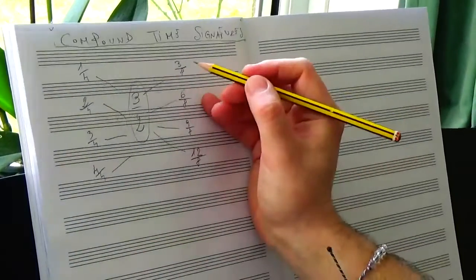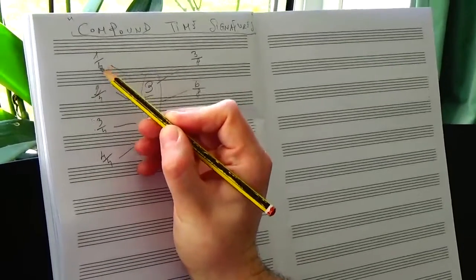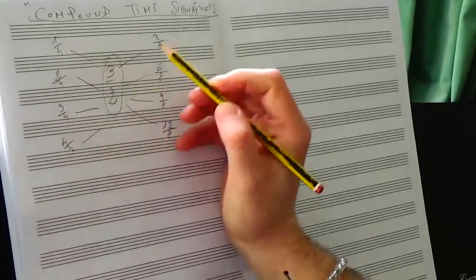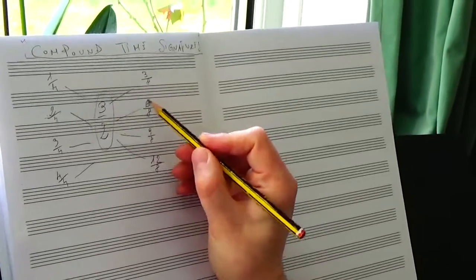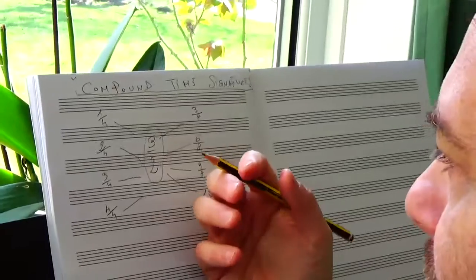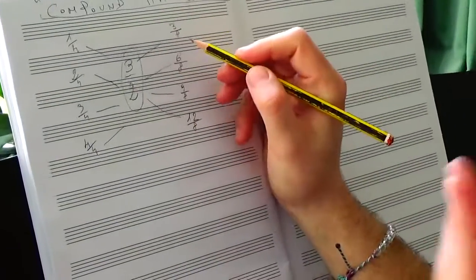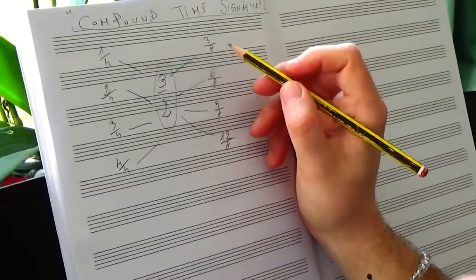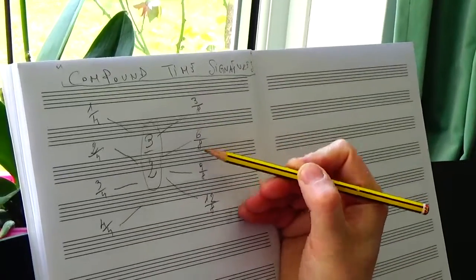Obviously, in this case now you might say, if you have declared that in this case the quarter note, the crochet is the count, which one will be the unit, the count in the 3 eighths, in the 6 eighths, and so on? It will be the quaver, will be the eighth note indeed. And that's all, this is the difference. In the 3 eighths, you have 3 counts, each of them is worth 1 eighth. Or 6 beats, each of them worth 1 eighth, and so on.